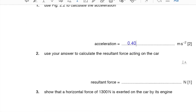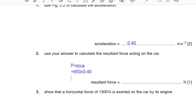Part 2: calculate the resultant force acting on the car. Resultant force = mass × acceleration = 850 × 0.40 = 340 N.